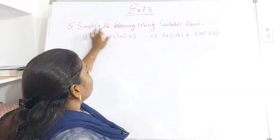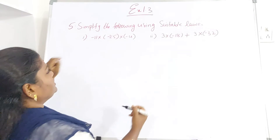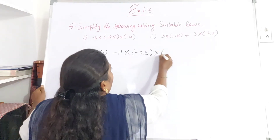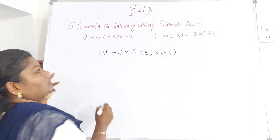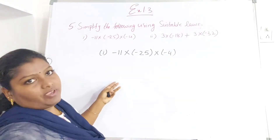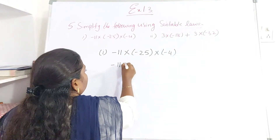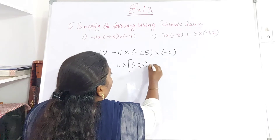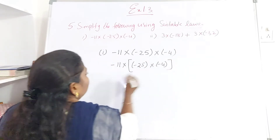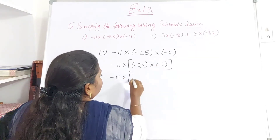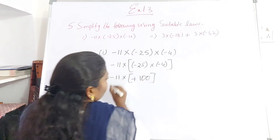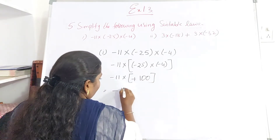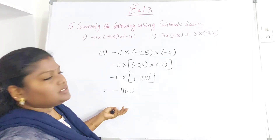Next question: simplify the following using suitable laws. The first one is minus 11 into minus 25 into minus 4. We can use the associative property, which is grouping. Grouping minus 25 into minus 4: minus into minus is plus, so 25 times 4 is 100. Then minus 11 into 100: minus into plus is minus, giving minus 1100. Using these laws makes simplification very easy.